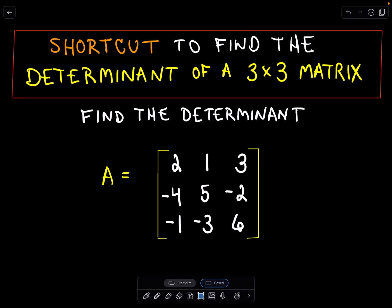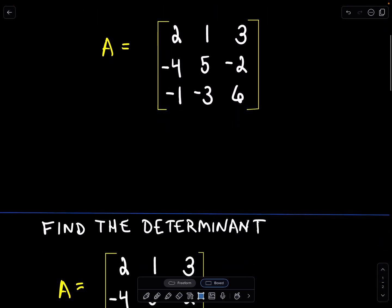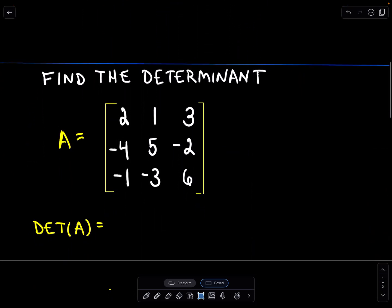So in this video, I'm going to use the shortcut method to find the determinant of a 3x3 matrix. So here we have our matrix A. Let's compute the determinant of that.